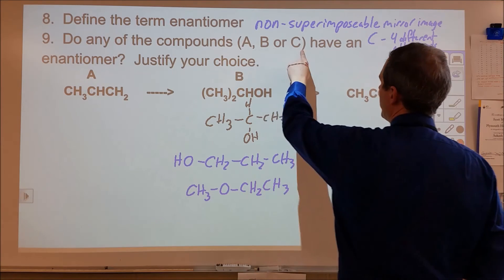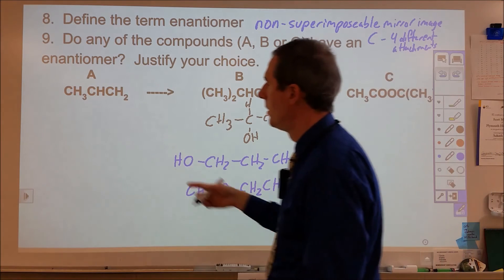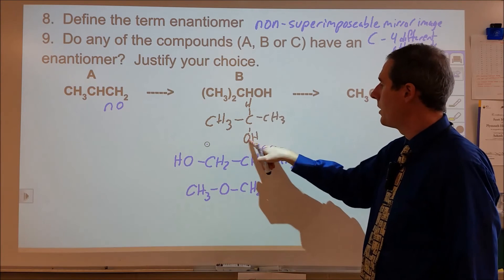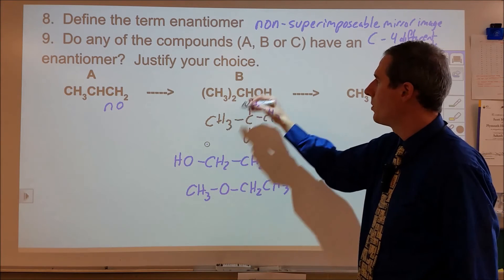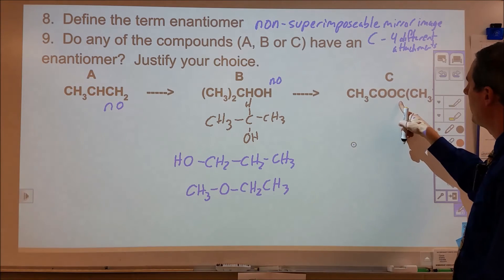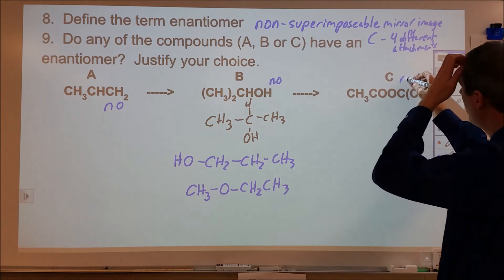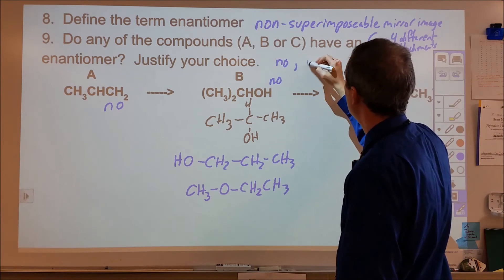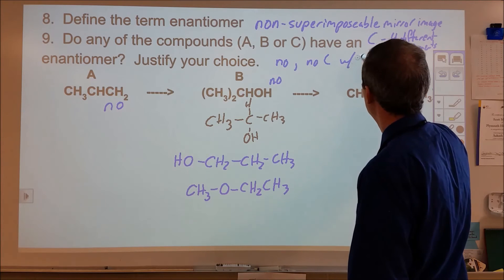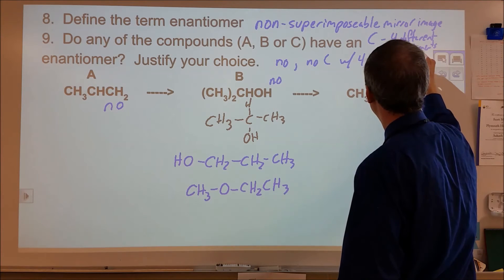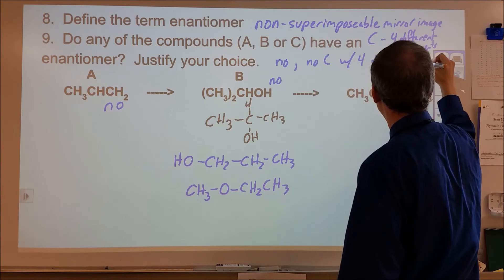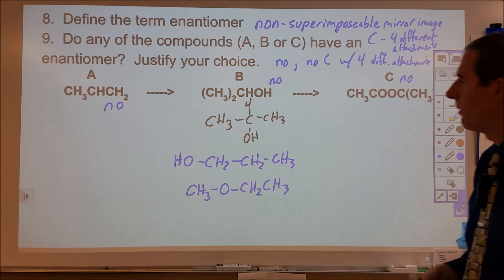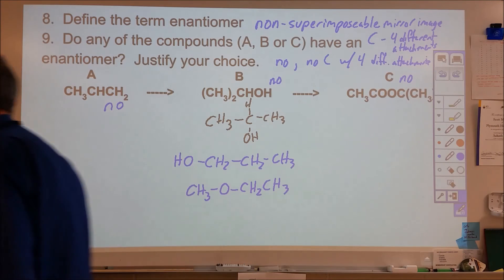Do any of the compounds A, B, or C have an enantiomer? Compound A does not. For compound B, we have a carbon with a hydrogen and an OH, but there are two CH3 groups — so this also does not have an enantiomer. For compound C, the ester, there are no carbons with four different attachments, so we would say no. The reason: no carbons with four different attachments, or equivalently, there are no non-superimposable mirror images.